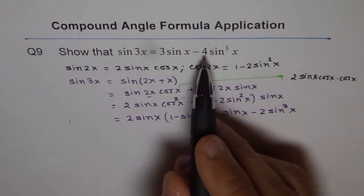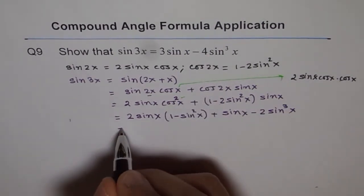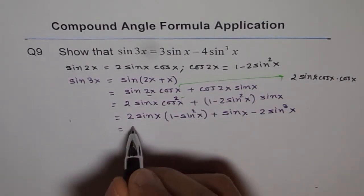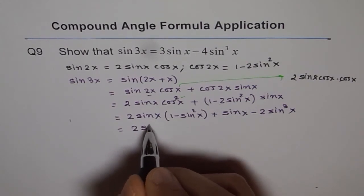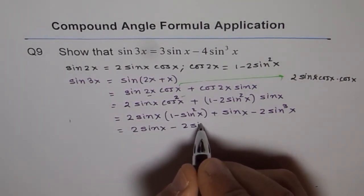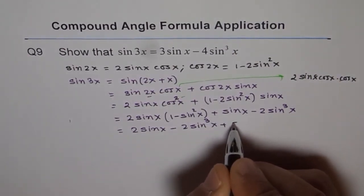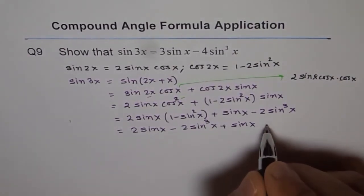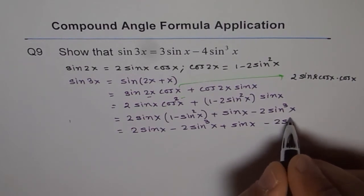Correct, so we need 4. We got 2 already. Good. Let me expand this part. We get 2 sine x minus 2 sine cube x plus sine x minus 2 sine cube x.